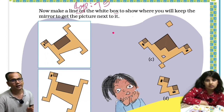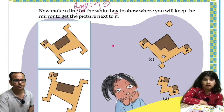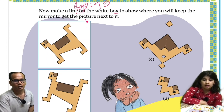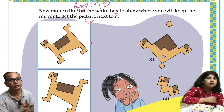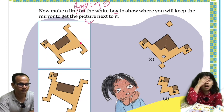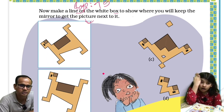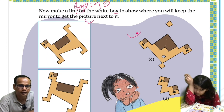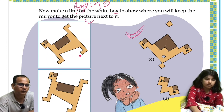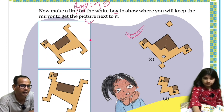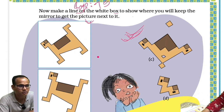Make a line on the white box to show where you will keep the mirror to get the picture next to it. Next to it means this is the one, right. So we have to get this image, and we have to place a mirror so that we will get this mirror image.